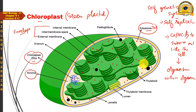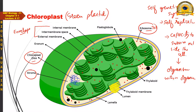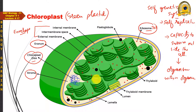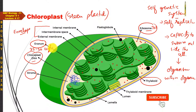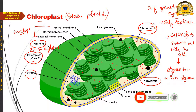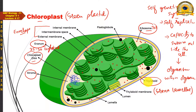Within the stroma, the most prominent structures are flattened sack-like structures piled up like a stack of coins. This whole stack is called a granum. Each flattened disk-like sack is called a thylakoid; many thylakoids placed one above the other form a granum, typically 25 to 50 thylakoids per granum. The thylakoid membranes are also called grana lamellae, and thylakoids within a granum are sometimes called smaller thylakoids.